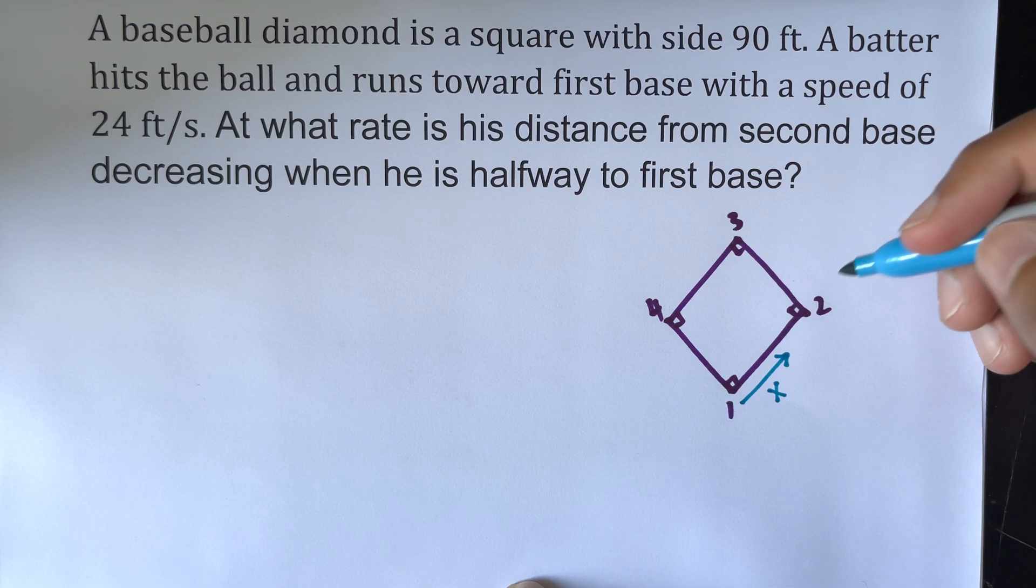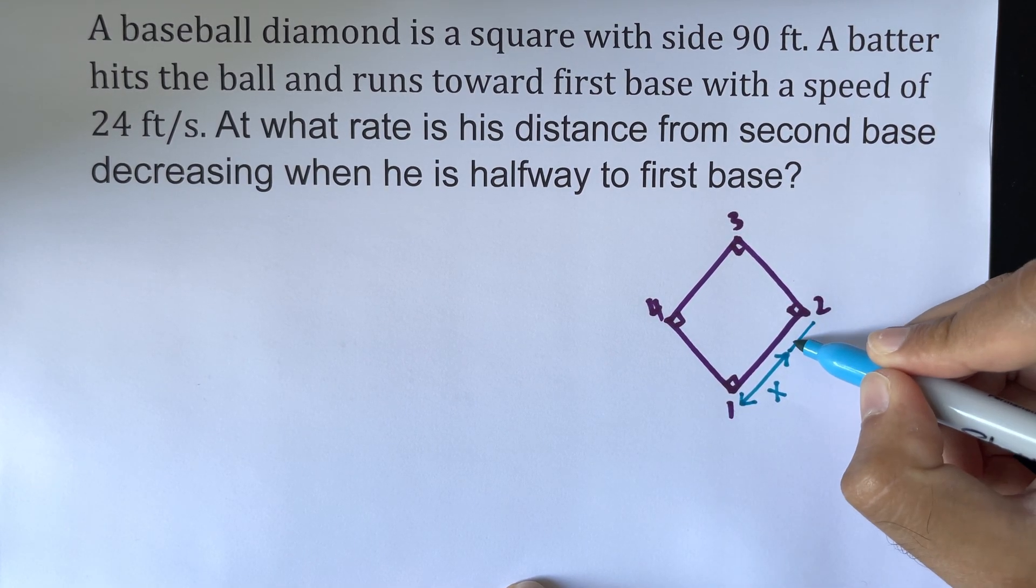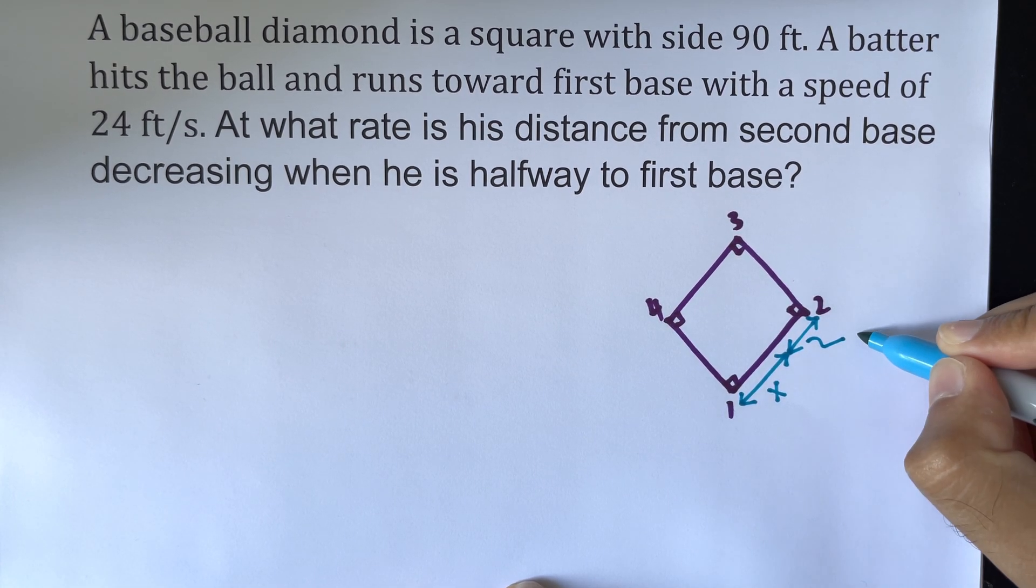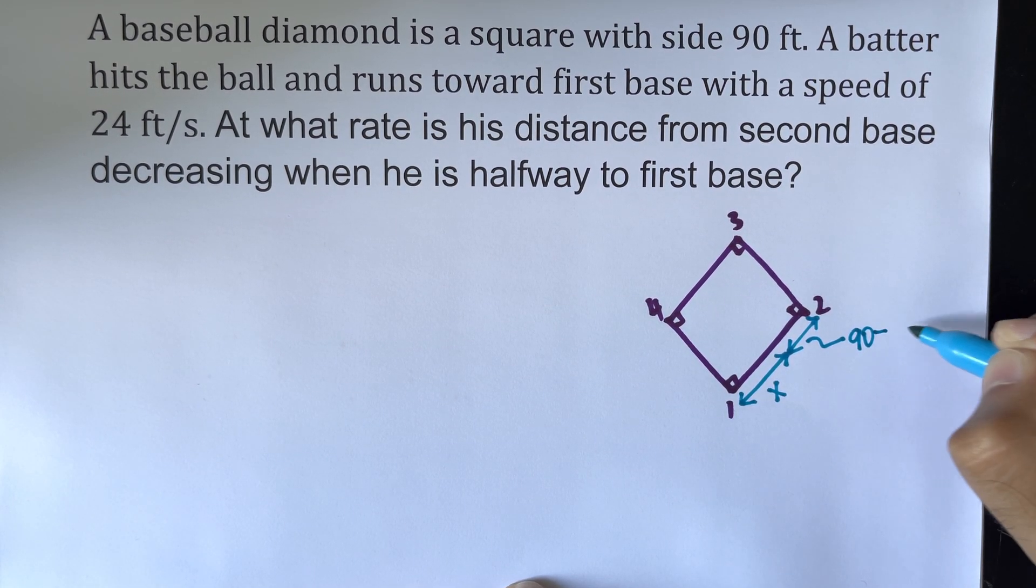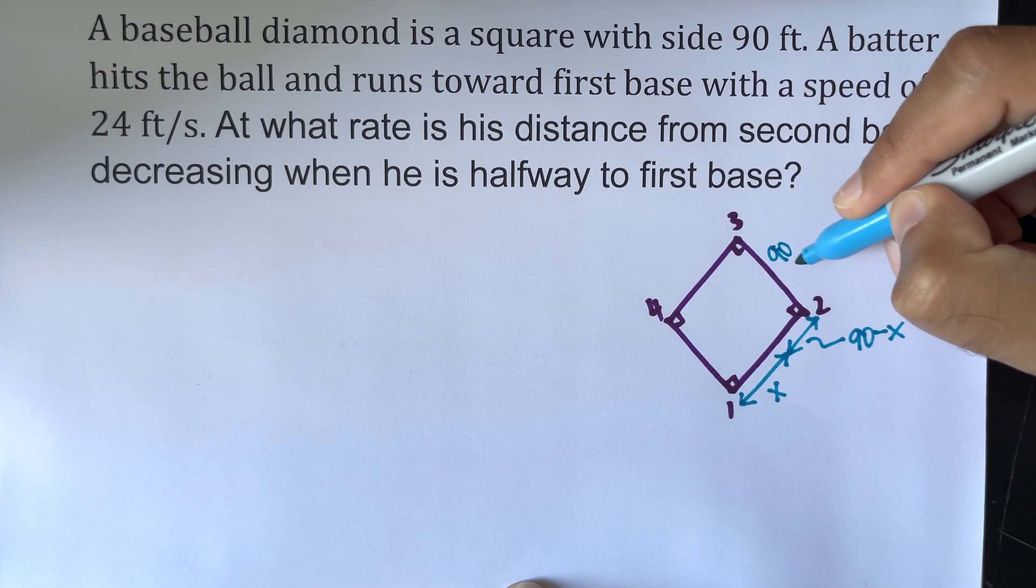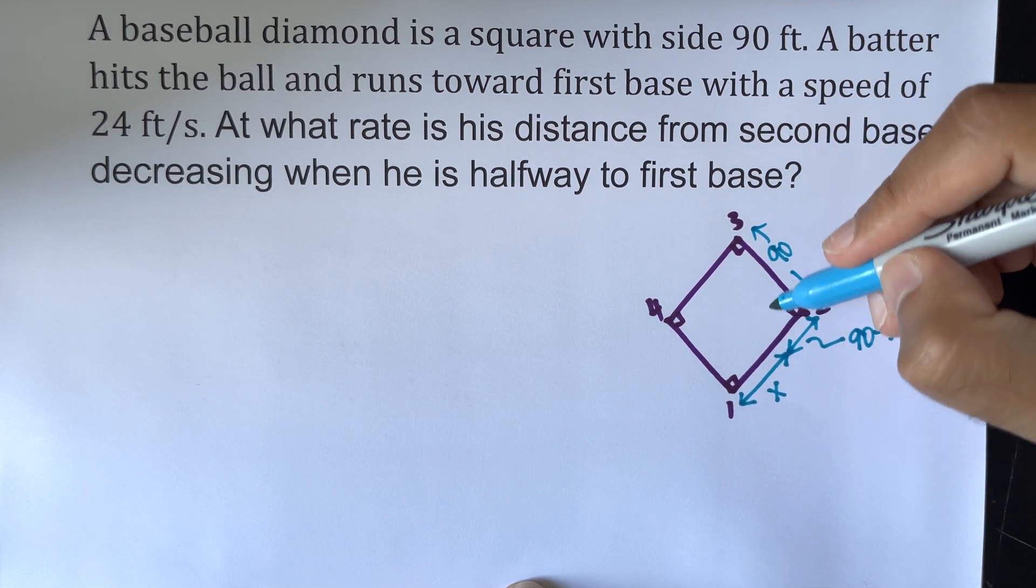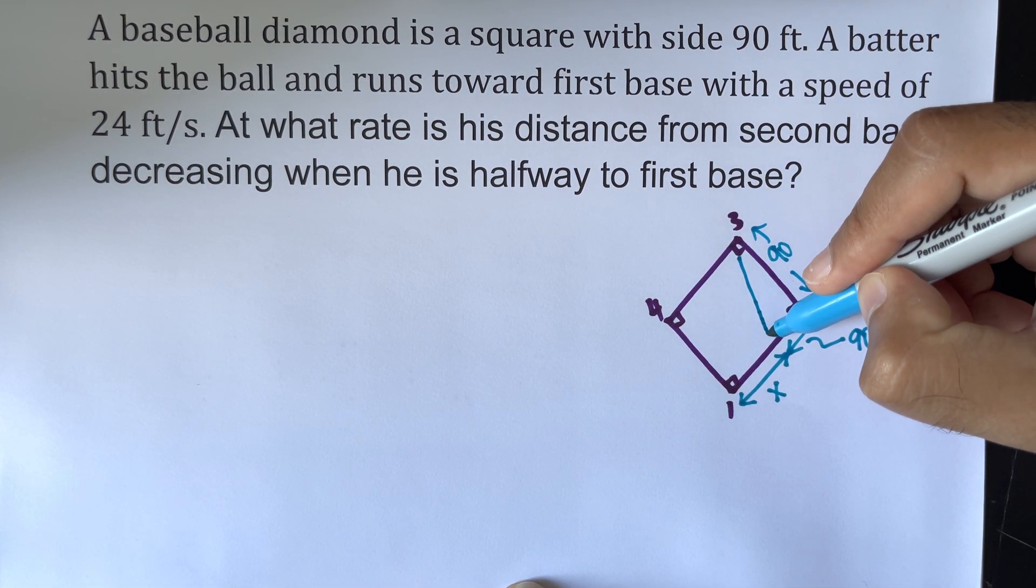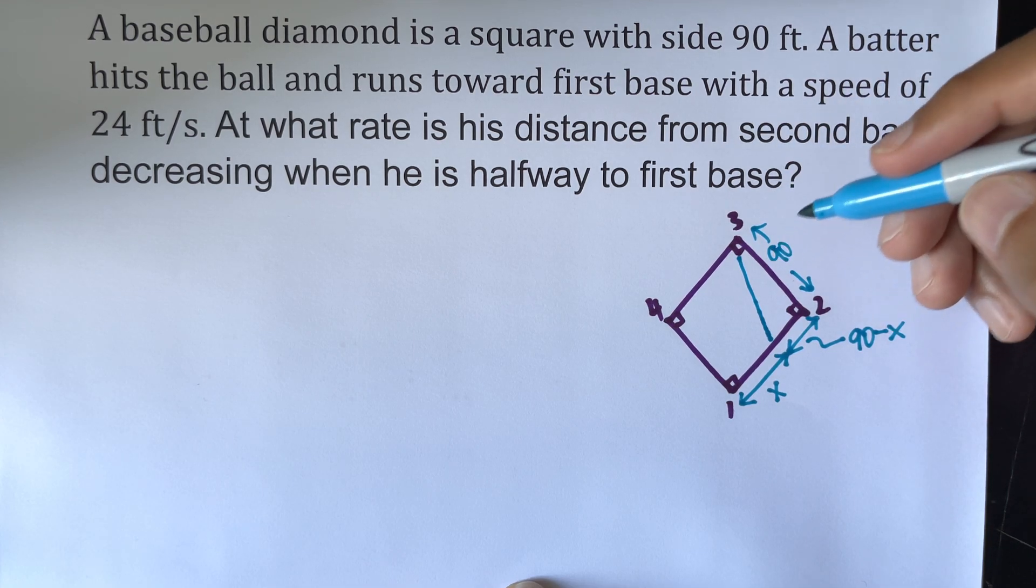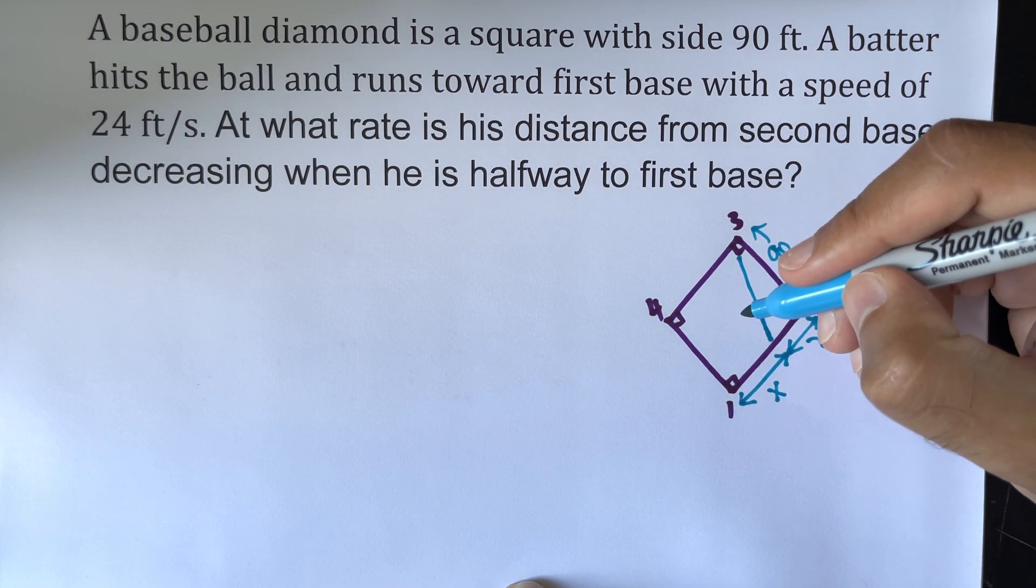And the remainder being 90 minus x, we know this length fully to be 90, and we're going to name that to be some value of d.